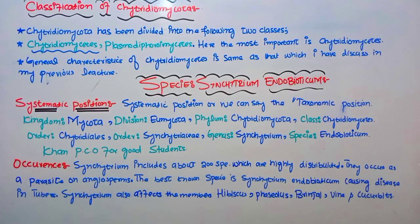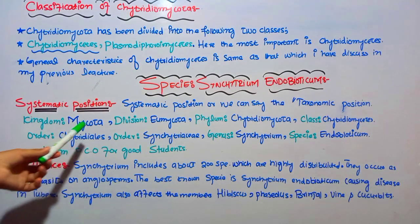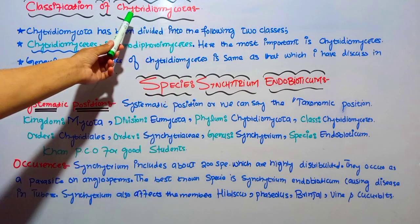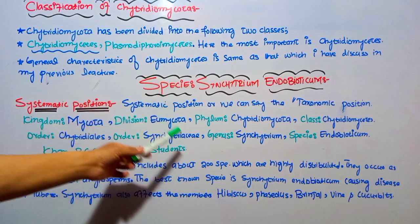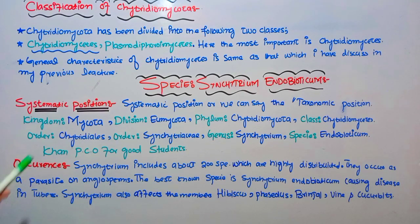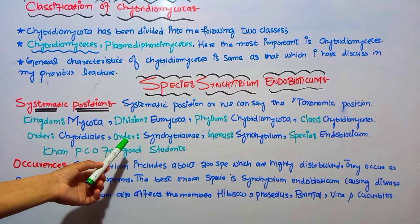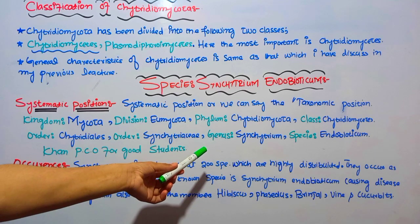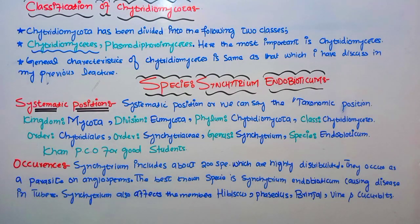So first we discuss the systematic position. The kingdom is Mycota, the division is Mycota, the phylum is Mycota. If I talk about class, the class is Chytridio mycota. The family is Synchytriaceae, the genus is Synchytrium, and the species is endobioticum.